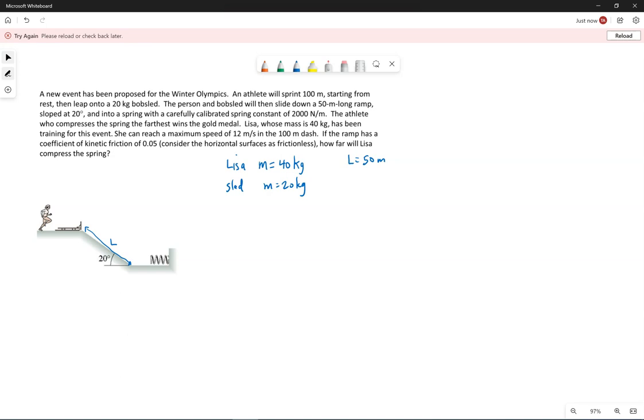Lisa can reach a maximum speed of 12 meters per second in the 100 meter dash, so I'm going to assume she has reached that 12 meters per second right before she jumps on the sled. The ramp has a coefficient of kinetic friction of 0.05. Consider the horizontal surfaces as frictionless. How far will Lisa compress the spring?